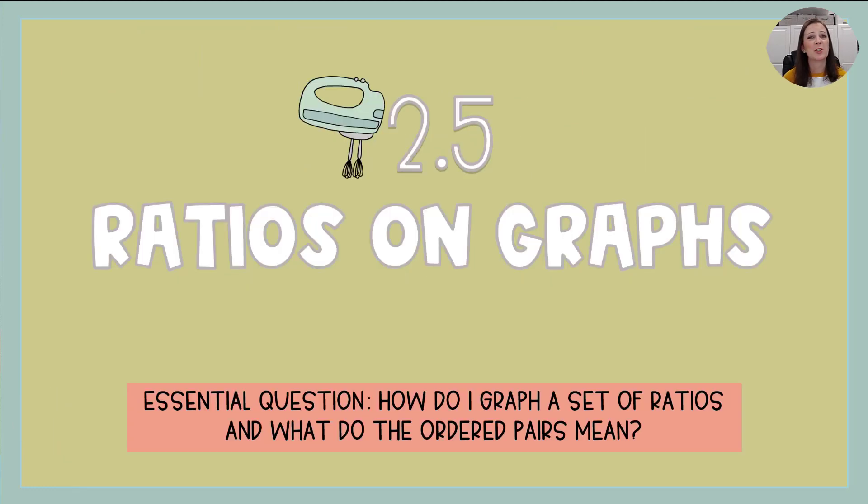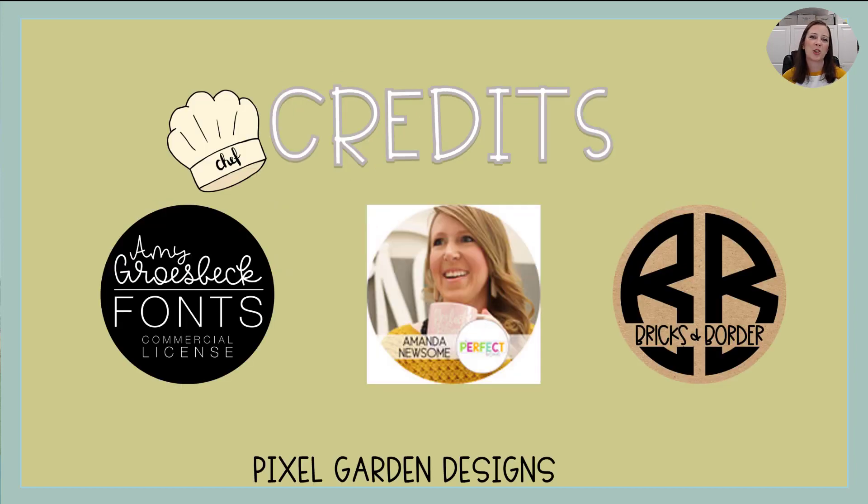And that, mathematicians, is 2.5 ratios on graphs. You should now be able to answer that essential question. How do I graph a set of ratios? And what does the ordered pair mean? Shout out to Amy Grosbeck, Amanda Newsome, Bricks and Border, and Pixel Garden Designs for your amazing fonts and clip art. Mathematicians, go forth and be amazing.